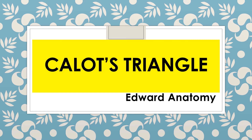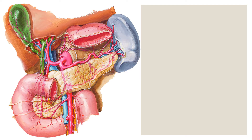So what is the location of Calot's Triangle? Calot's Triangle is present under the surface of the liver. In the slide on the screen we can identify the brown color structure which is nothing but the liver. Under the surface of the liver we can identify the triangular area. That triangular area is called Calot's Triangle.